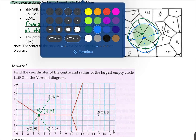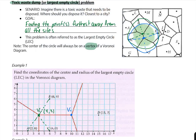Looking at the next vertex, V2 is created by sites D, C, and B. Let's go ahead and find the distances. All of the blue distances are exactly the same, so it's enough to find just one. Since V2 is at coordinates (10, 3) and D is at (15, 3), this creates a horizontal line, so the distance is 15 minus 10, which is 5.